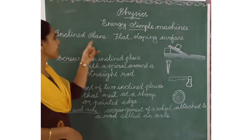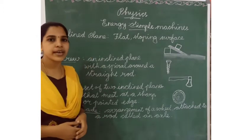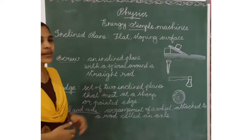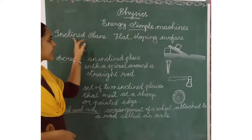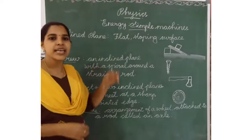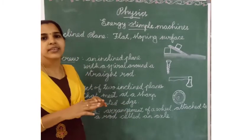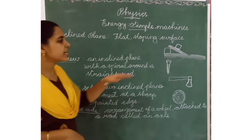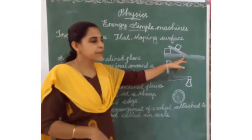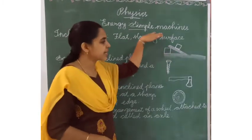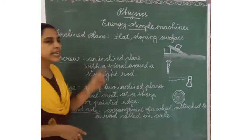Today we will study another simple machine: Inclined Plane. What is the meaning of Inclined Plane? A plane is a flat surface. An inclined plane is a flat, sloping surface where one end is higher and another end is lower. It is a flat and smooth surface. This is called an Inclined Plane.